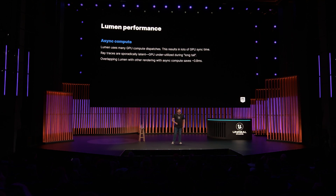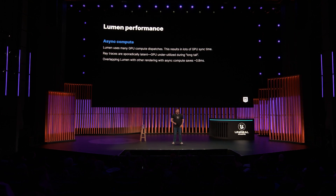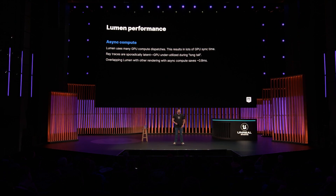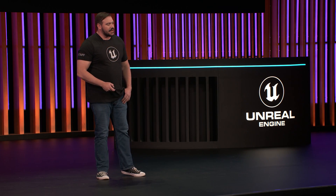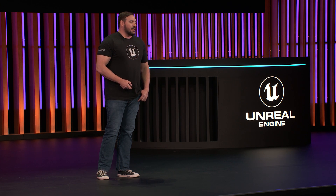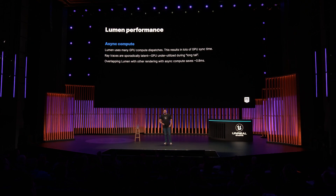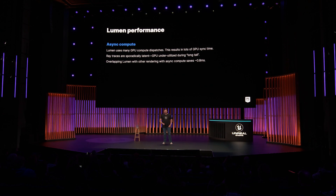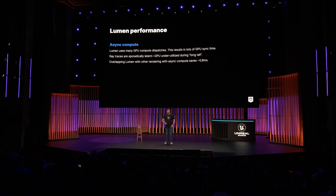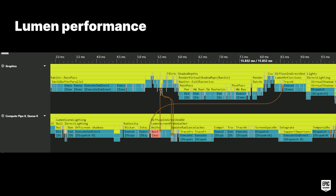Lumen's processing is composed of many interdependent GPU dispatches, resulting in a lot of GPU time spent in synchronization when performed in-line with other graphics work. On top of that, software ray tracing threads retire in varying lengths of time, causing dispatches to have a long tail that leaves shader cores largely underutilized. By putting Lumen's dispatches in parallel with graphics work on async compute, we clawed back about 0.8 milliseconds of GPU time on next-gen consoles. In Pix, you can see the graphics pipe on top and Lumen's many dispatches running in parallel on an async compute pipe on the bottom.